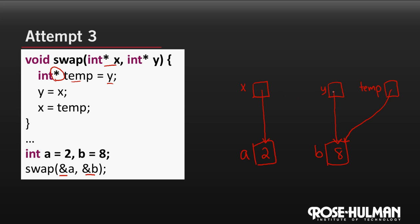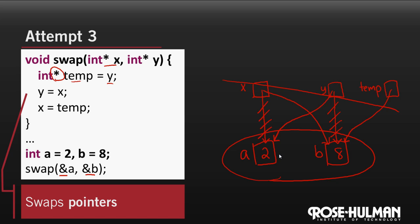Now, I can say that y gets x. So one pointer equaling another means that they point to the same thing at the same address. And then x gets temp means that x points to what temp points to. And our function ends. So we've successfully swapped the pointers. So x, if we were going to dereference it, would give us eight. And y would give us two. However, x, y, and temp going out of scope. Once again, we see that a and b, the actual arguments, were never swapped. So swapping the pointers gets us closer, but isn't a final solution.